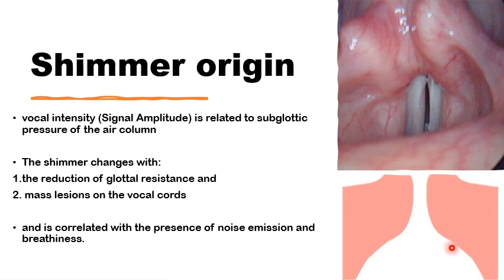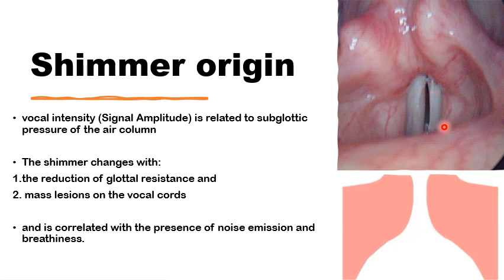The intensity of the voice — the amplitude of the glottal signal — is related to the subglottic air pressure and to the resistance to airflow at the glottal level, known as glottal valve resistance. This resistance depends on factors like vocal fold stiffness, vibrating mass, and contact mode. Shimmer can change with reduction in glottal resistance, with mass lesions on the vocal folds, and correlates with the presence of noise in the glottal signal, particularly breathiness related to reduced glottal valve resistance.